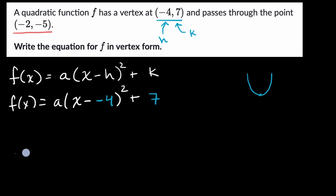Now, the next thing we can do is simplify this a little bit. That uncertainty you heard in my voice was, well, do I simplify this subtracting a negative and just making it adding four? I'll do that in the next step. So the next thing I want to do is say, what is f of negative two? Well, we know that f of negative two is negative five, and we can use that to solve for a.